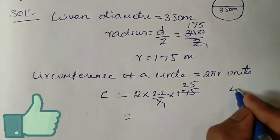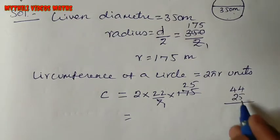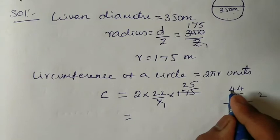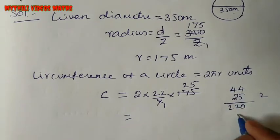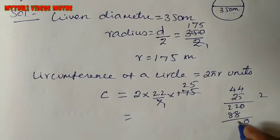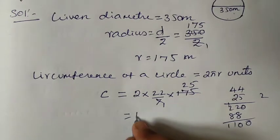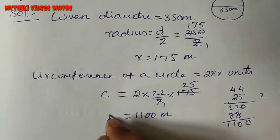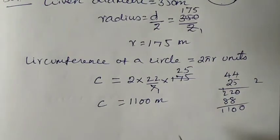Multiply the numerator: 44 multiplied by 25. 5 fours are 20, write 0 carry 2. 4 fours are 16, plus 2 is 18 — so that gives 1100. Circumference equals 1100 metres.